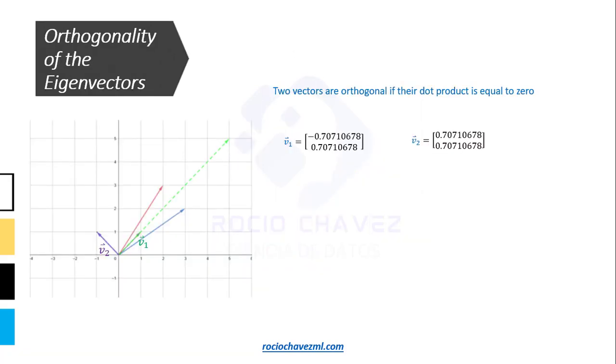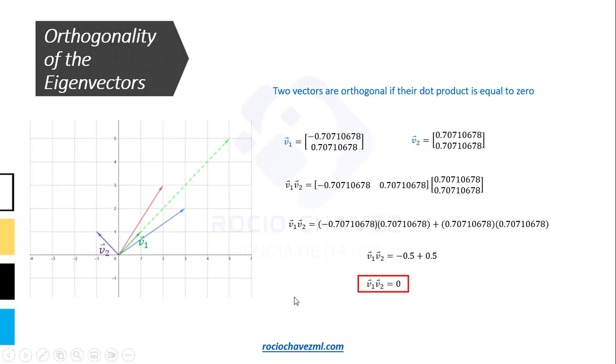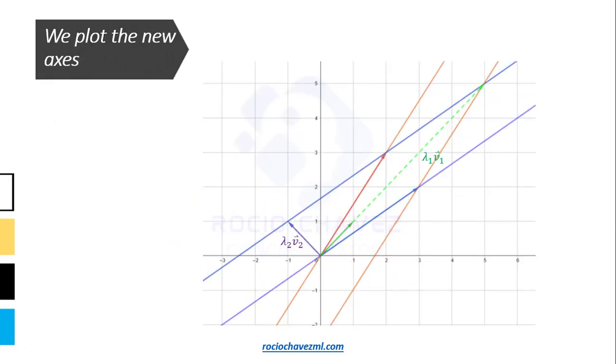To corroborate whether the eigenvectors are indeed orthogonal, we can calculate their dot product and see if it is equal to 0. And we see that it is indeed equal to 0.